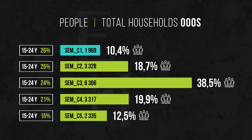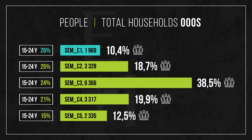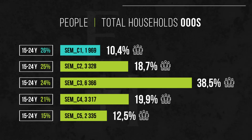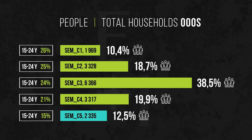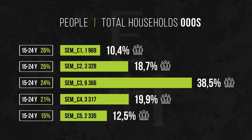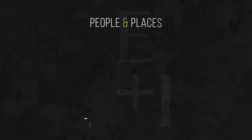In cluster 1, young people account for 26% of adult population. But by the time we get to cluster 5, that reduces to 15%. That has huge implications for marketers, particularly marketers at the top end.